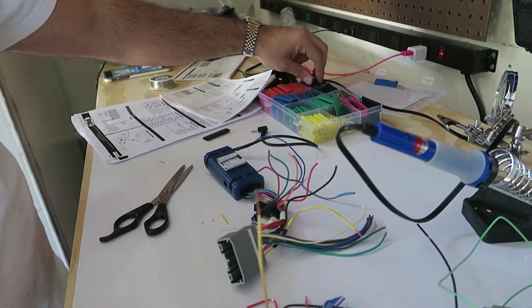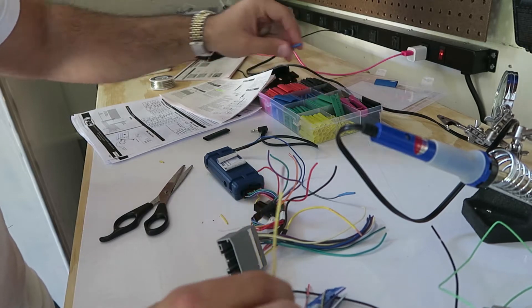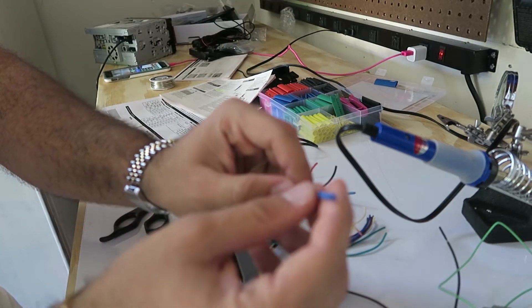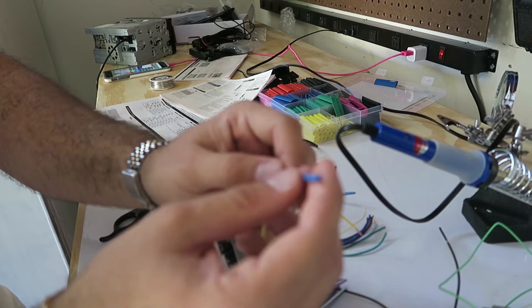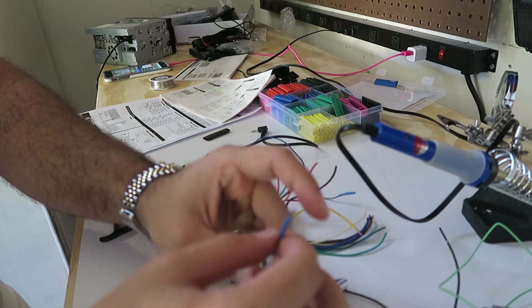So before we get to the soldering part, it's extremely important, this is the number one made mistake of all soldering of wire is that you should always put the wire wrap on first, alright?